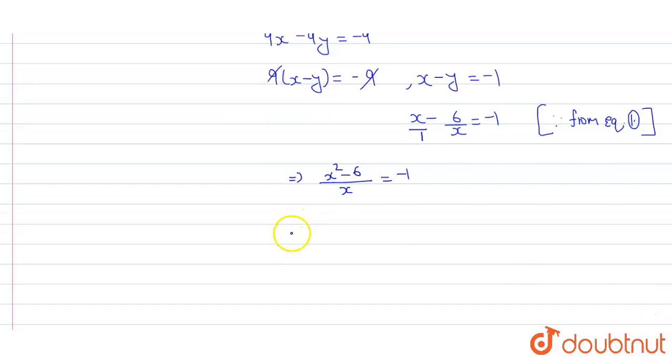This gives x squared minus 6 equals minus x, so x squared plus x minus 6 equals 0. By middle term split, we get x squared minus 2x plus 3x minus 6 equals 0. Taking x and 3 common, we get x minus 2 times x plus 3.